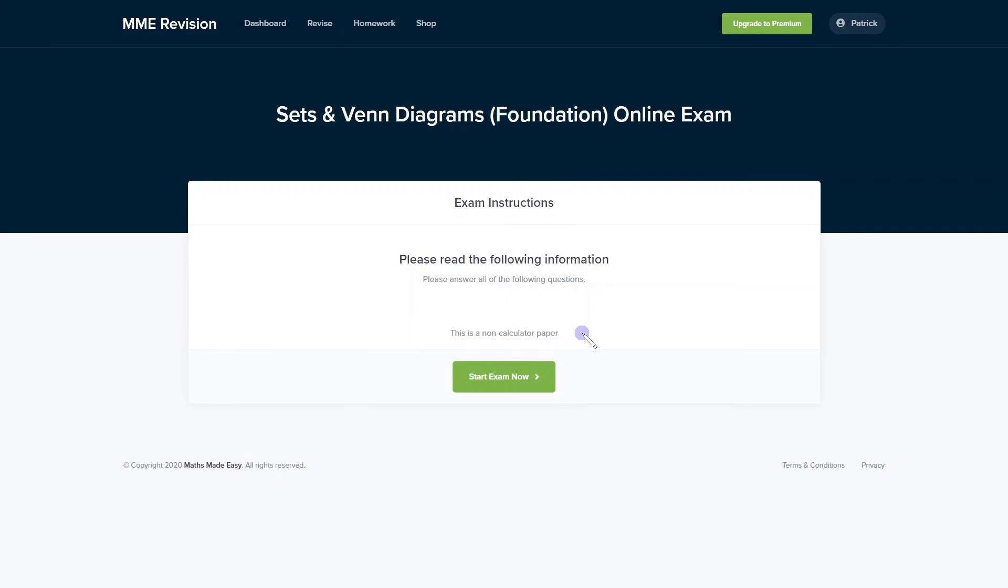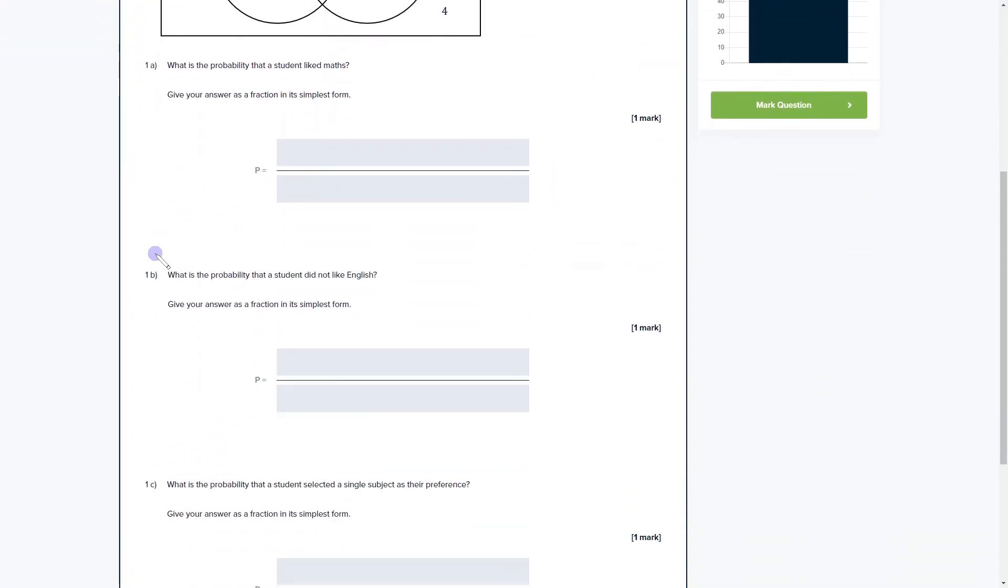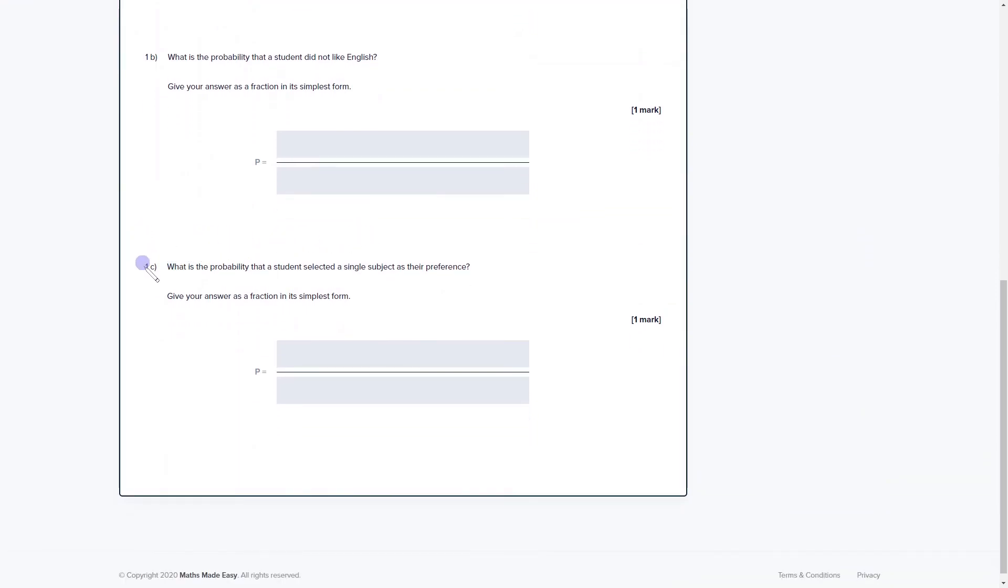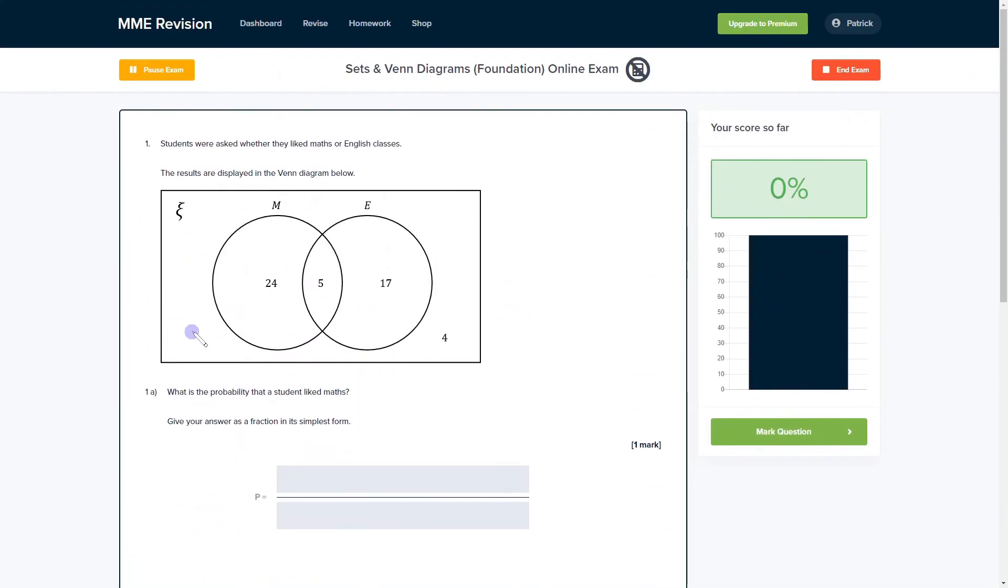So if you want to familiarize yourself with some Venn diagram exam style questions, then you can do so with our online exam. It's available through our revision platform. If you take the test, you'll find loads of different questions to have a go at, a variety of different question types, and you'll get instant feedback on all of it. So this is a really good way of keeping track of your progress and finding out where you need to improve. If you're interested, then you can click the link below and it will take you straight over there.